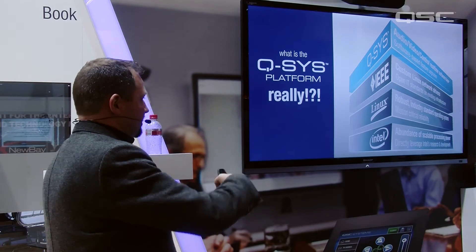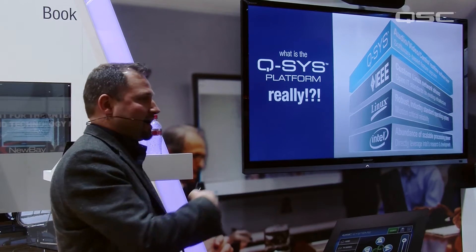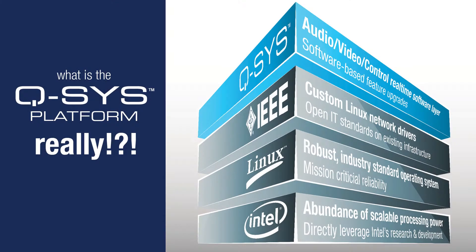This is a look at a software layer, and this is how IT and software people think. This is something new to our industry that we're going to have to start getting our arms wrapped around — looking at stacks in the R12 model and other models like the OSI model. This is a very simplified version of our Q-SYS operating system model.